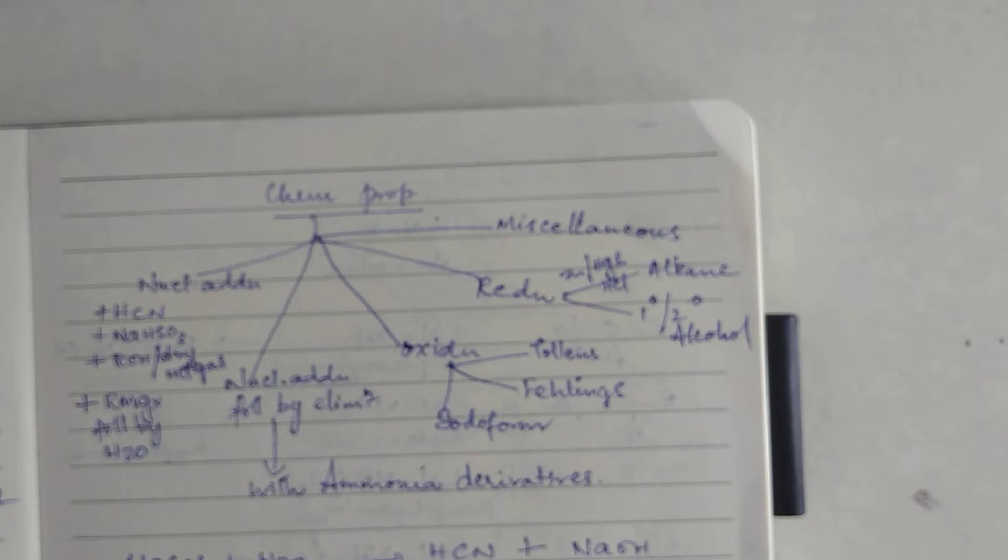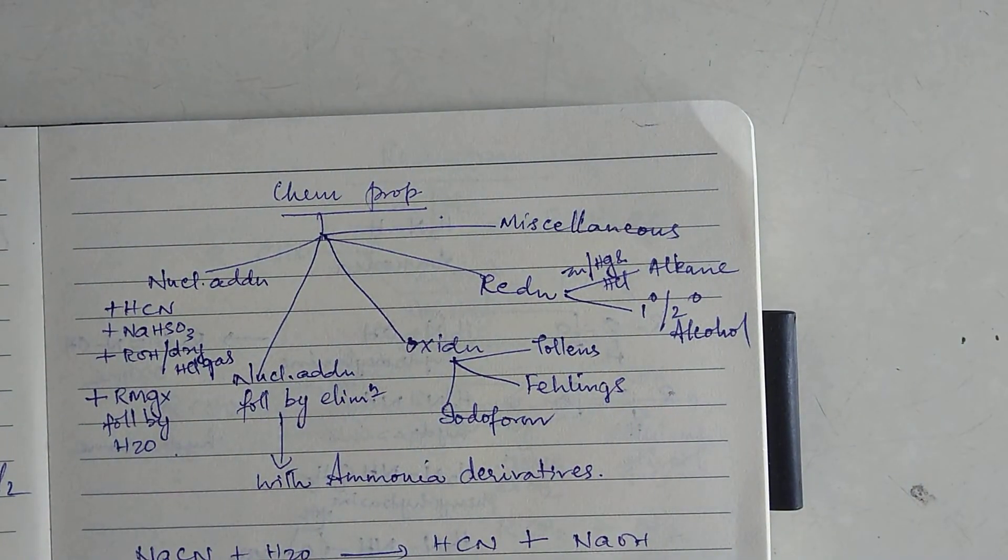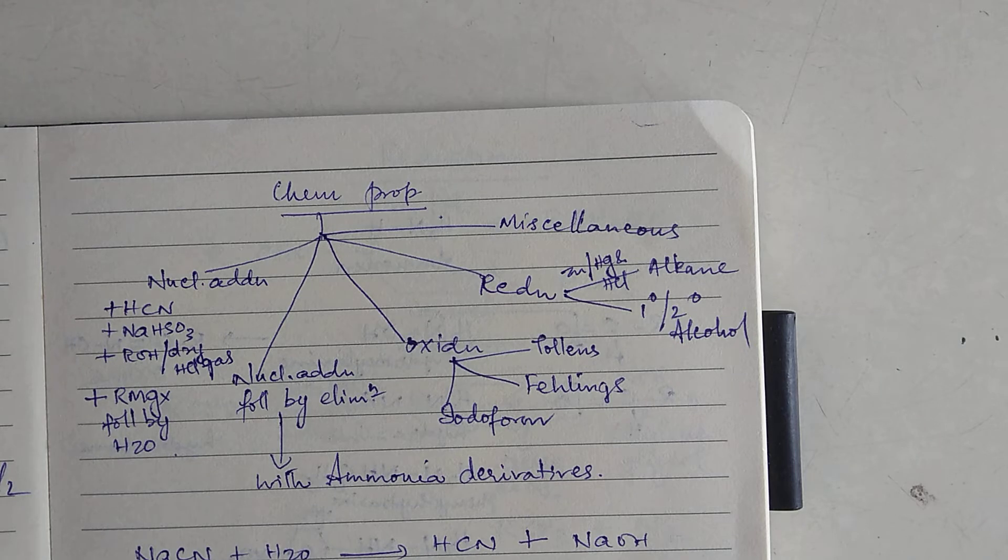Now, to continue with chemical properties, the chemical properties of aldehydes and ketones have been classified under different headings. What are the different headings?